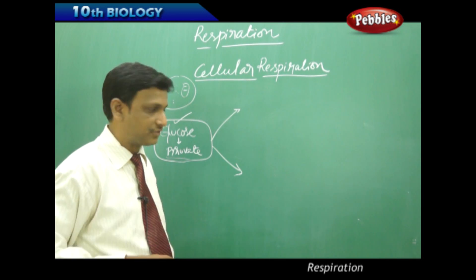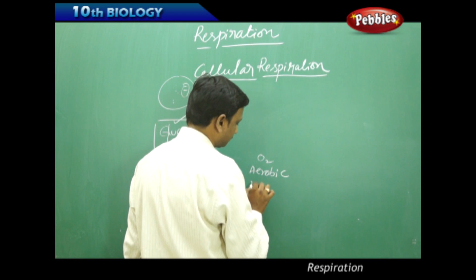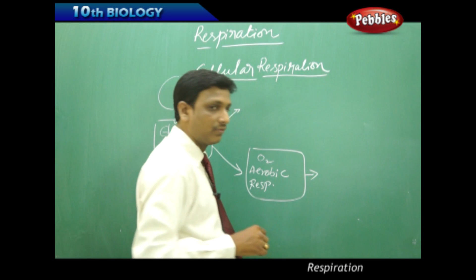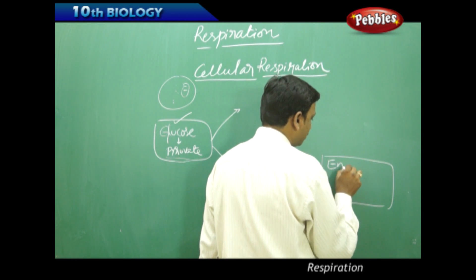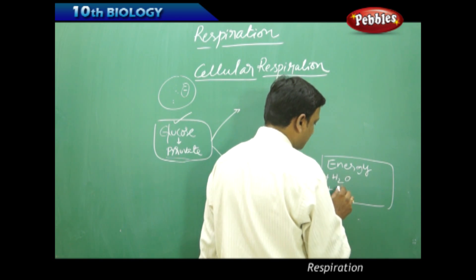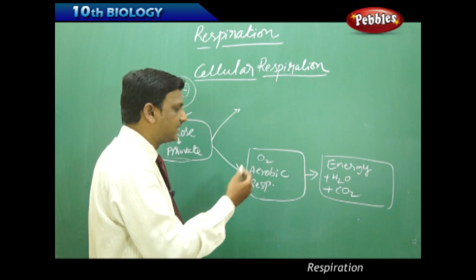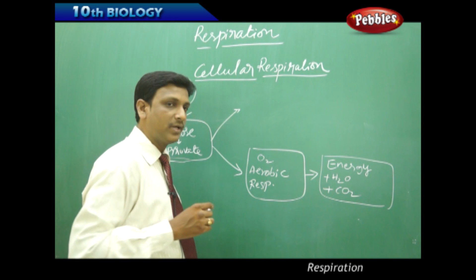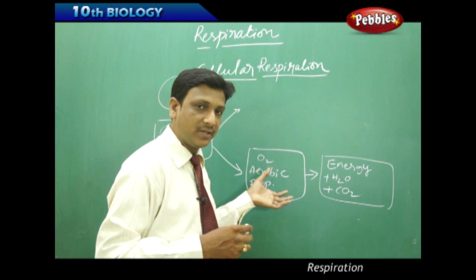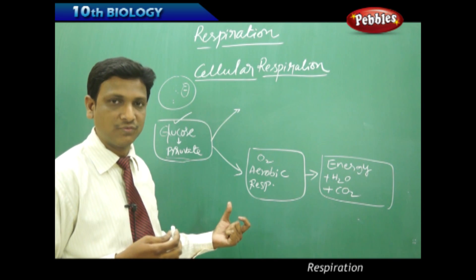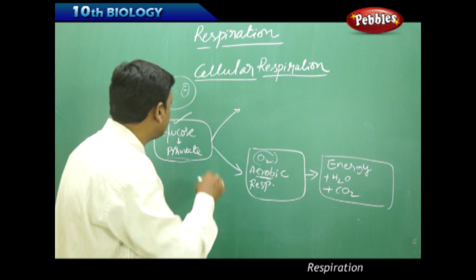If oxygen is available, aerobic respiration takes place. In aerobic respiration, energy is produced along with water, carbon dioxide, and a certain amount of heat. These are the byproducts of aerobic respiration, and a large amount of energy is released. The second part of aerobic respiration is called the Krebs cycle, and it takes place in the mitochondria.